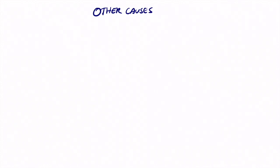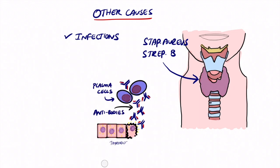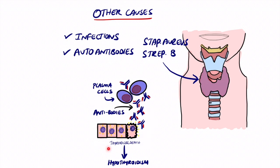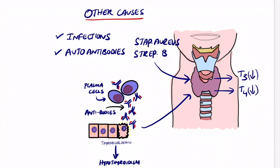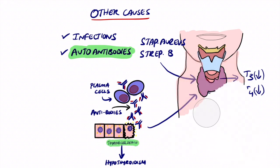Let's look into a bit more detail at the different types and other causes. These can include infections such as Staphylococcus and Strep B. Most importantly and commonly, autoantibodies directly attack the thyroid, leading to destruction of thyroid cells, decreased T3 and T4 production, and overall reducing the metabolic processes.